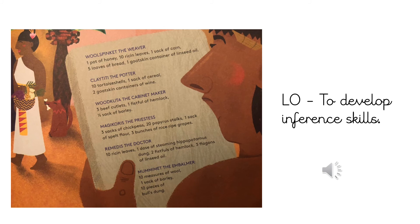Magic Chorus the priestess: three sacks of chickpeas, fifty papyrus stalks, one sack of spelt flour, three bunches of ripe grapes. Remedies the doctor: ten ricin leaves, one dose of steaming hippopotamus dung, two fistfuls of hemlock, three flagons of linseed oil. Mamamets the embalmer: ten measures of wool, one sack of barley, ten pieces of bull's dung.